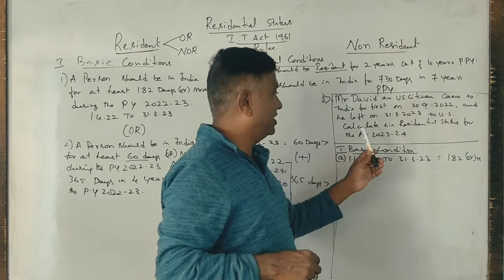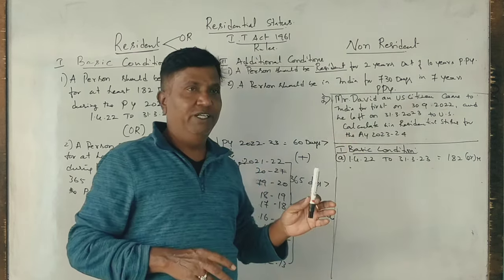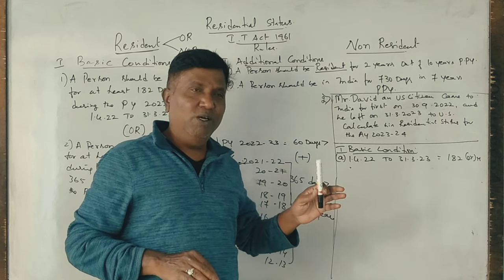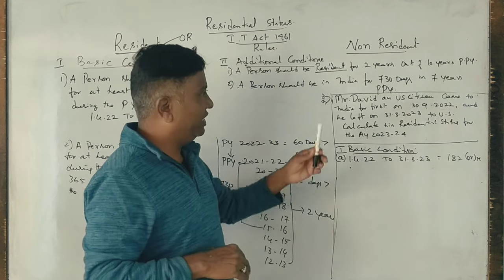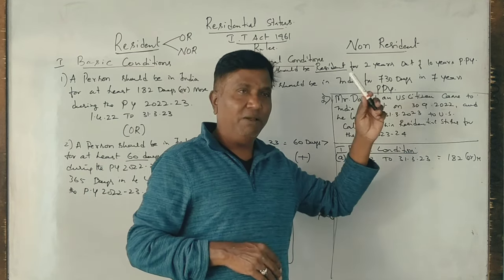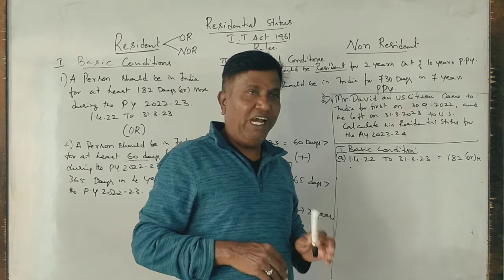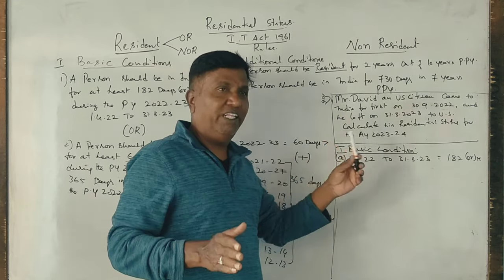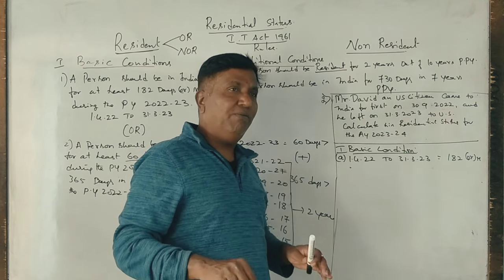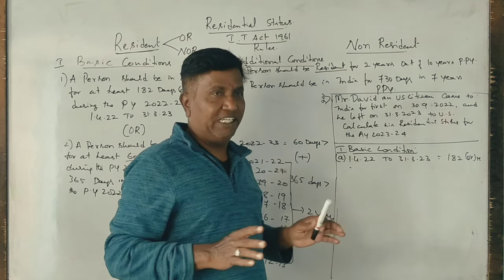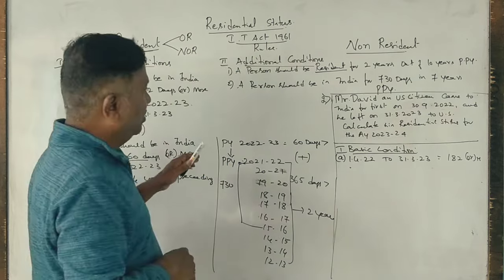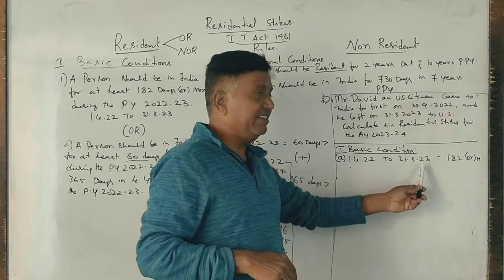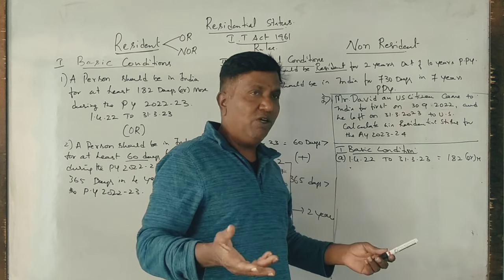Calculate his residential status for the assessment year 2023-24. Now, he's an American citizen who came for the first time in September 2021. We're trying to determine his residential status by checking the basic conditions. In the previous year of 2022-2023, did he stay 182 days or more in India?